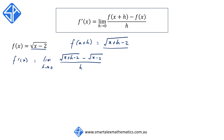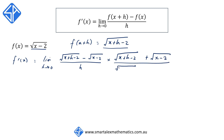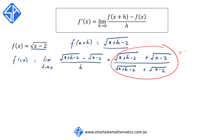The trick to this one is we're going to multiply by the conjugate of the numerator, top and bottom. So we're going to multiply by the square root of x plus h minus 2 plus the square root of x minus 2, over the same thing. Now multiplying by this term is essentially multiplying by 1, so it doesn't change the expression.